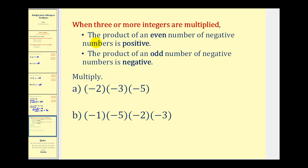Now when you're multiplying three or more integers, there is a shortcut rule. The product of an even number of negatives will always be positive, and the product of an odd number of negatives will always be negative.